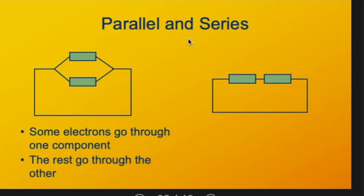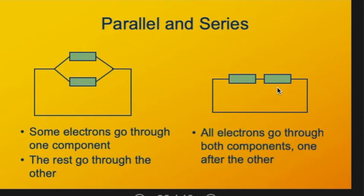When components are in series, which is shown here one after the other, then all electrons go through both components, through one and then through the other.